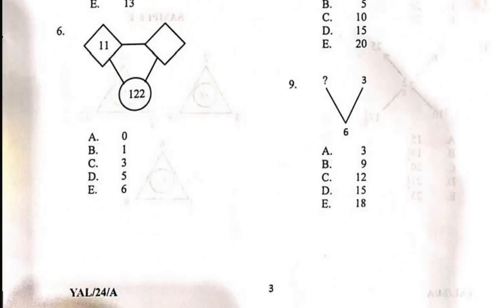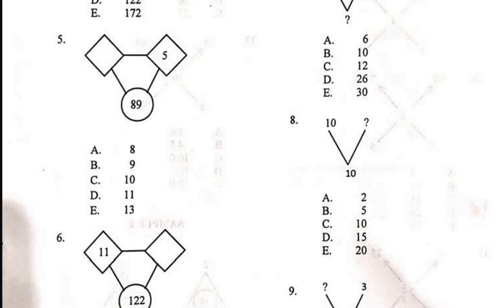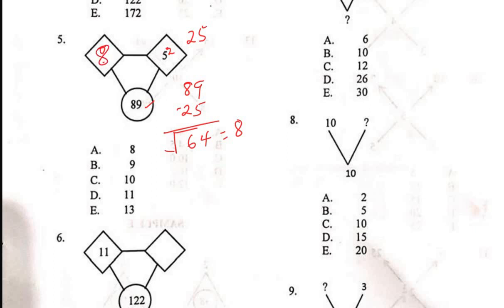For Question 5, we square the 5, giving 25. The other value is missing, so we subtract 25 from the total of 89: 89 − 25 = 64. The square root of 64 is 8. So what is missing is 8, since 8² = 64 and 64 + 25 = 89. The right-hand answer is option A, which is 8.